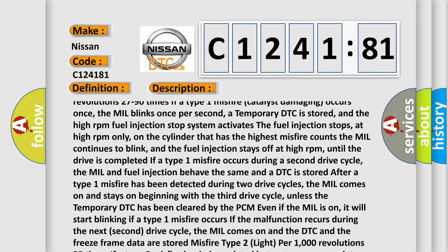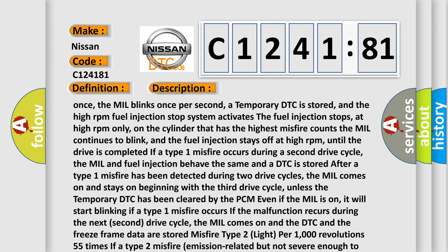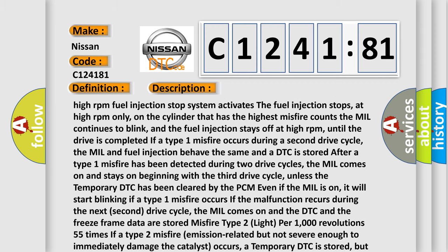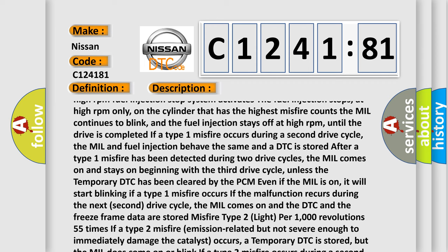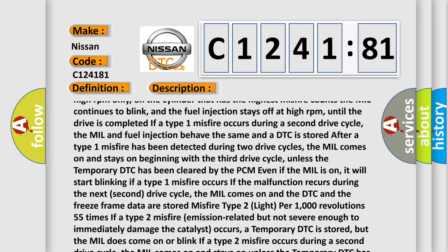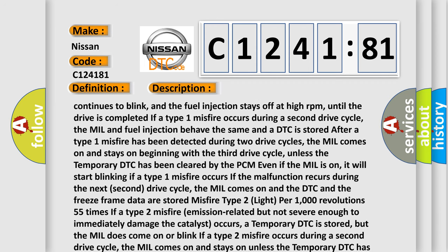Malfunction B: throttle valve opening angle in fail-safe mode is not in specified range. ECM controls the electric throttle control actuator by regulating the throttle opening to 20 degrees or less.